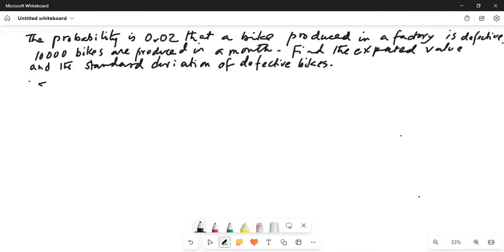I will share my screen with you. The probability is 0.02 that a bike produced in a factory is defective. 10,000 bikes are produced in a month. Find the expected value and the standard deviation of defective bikes.